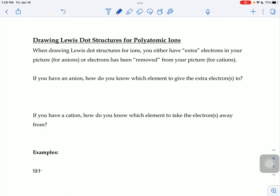The last thing we're going to look at for how to draw Lewis dot structures is how to draw a structure for a polyatomic ion, a group of atoms that have a charge.